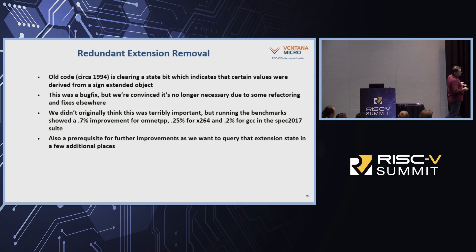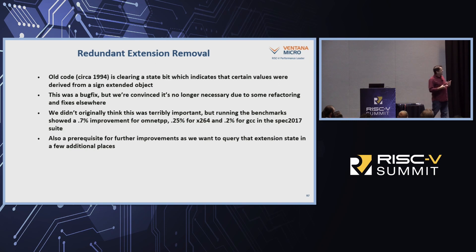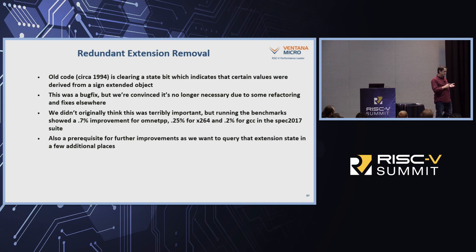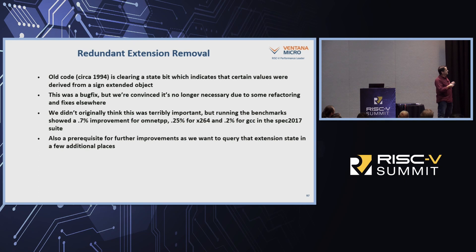As we continued looking, we found more problems. We found a case of a redundant sign extension where GCC was losing track of the fact that a particular value had already been extended. We traced this back to code from 1994 — when there was no public mailing list, no test suite, and no requirement to justify patches. We couldn't figure out why that code existed. After a ton of evaluation reviewing code from 1994 forward, we concluded the bug it was fixing had been fixed elsewhere. Removing that one little chunk of code is about three-quarters of a percent on OmniTPP, and another quarter percent on X264 and GCC as well.